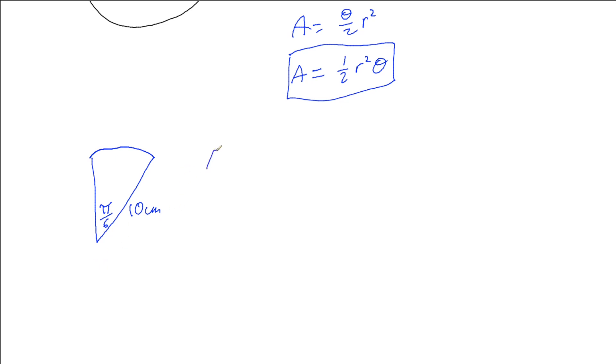So to do this we can write that our area is half of our radius squared times our angle, so we're going to have a half times 10 squared times π over 6. And so if we work this out, well 10 squared is 100, half of 100 is 50, and we've got this over 6 here which involves a 2, so we've got 25π over 3 centimeters squared. And that's all we need to do.